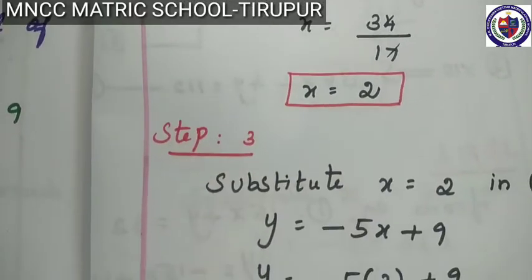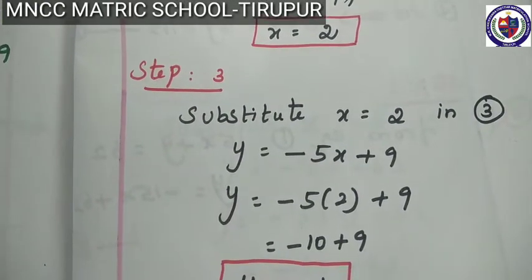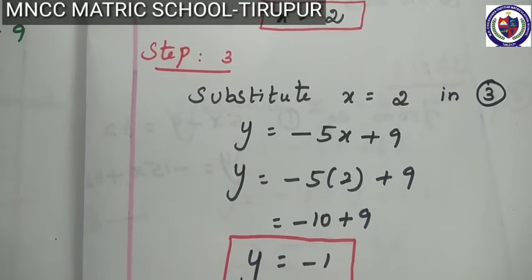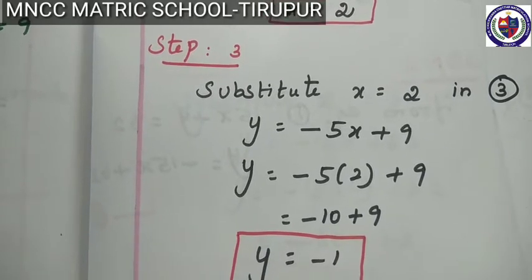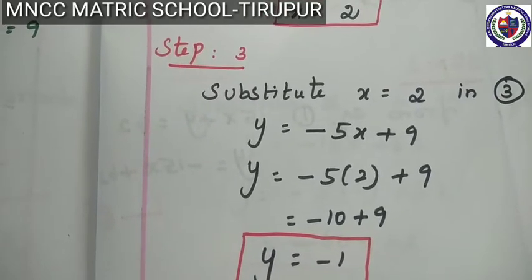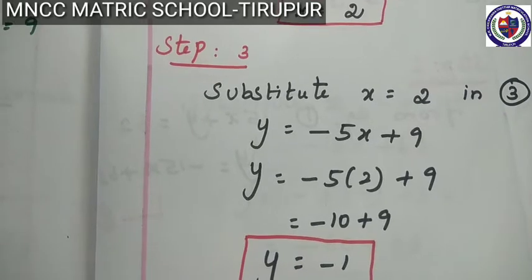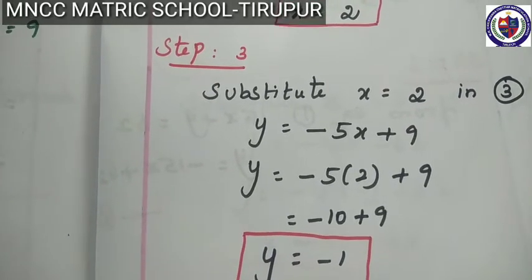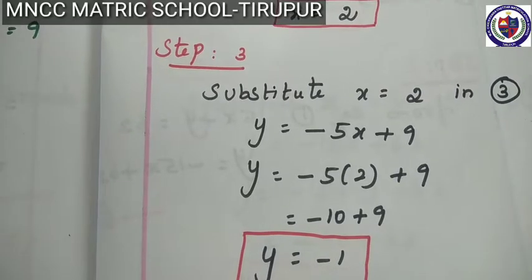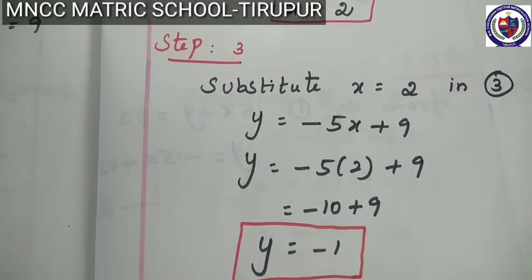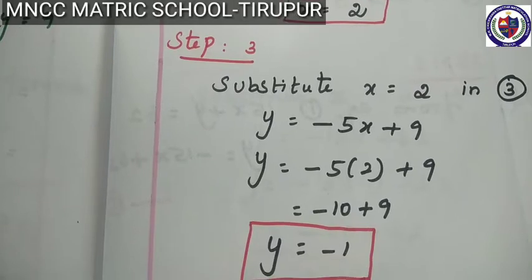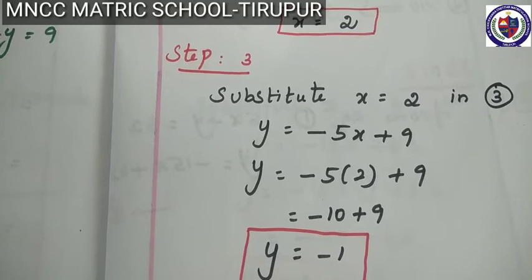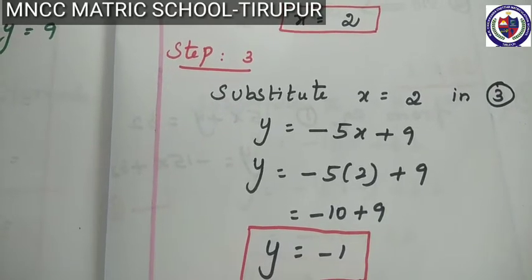Next, step number 3: substitute the value of x in any one equation. So substitute x is equal to 2 in equation 3. Equation 3: y is equal to minus 5x plus 9. So y is equal to minus 5 into 2 plus 9. That is minus 10 plus 9, so y is equal to minus 1. We found the two variables: one variable x is equal to 2, and the other variable y is equal to minus 1.